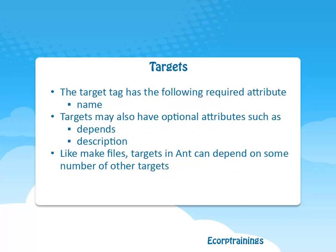Coming to targets. The target tag has the following required attribute — name, the logical name for a target. Targets may also have optional attributes such as: depends, a list of other target names for which this task is dependent upon (the specified task or tasks get executed first); and description, a description of what a target does. Like make files, targets in Ant can depend on some number of other targets.